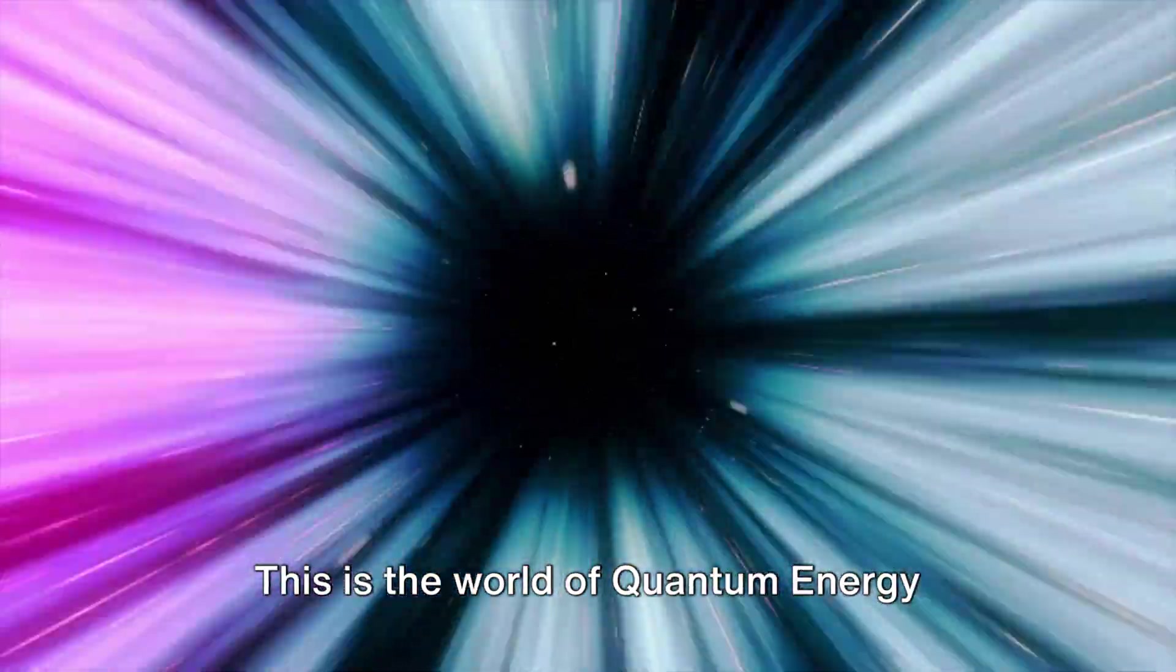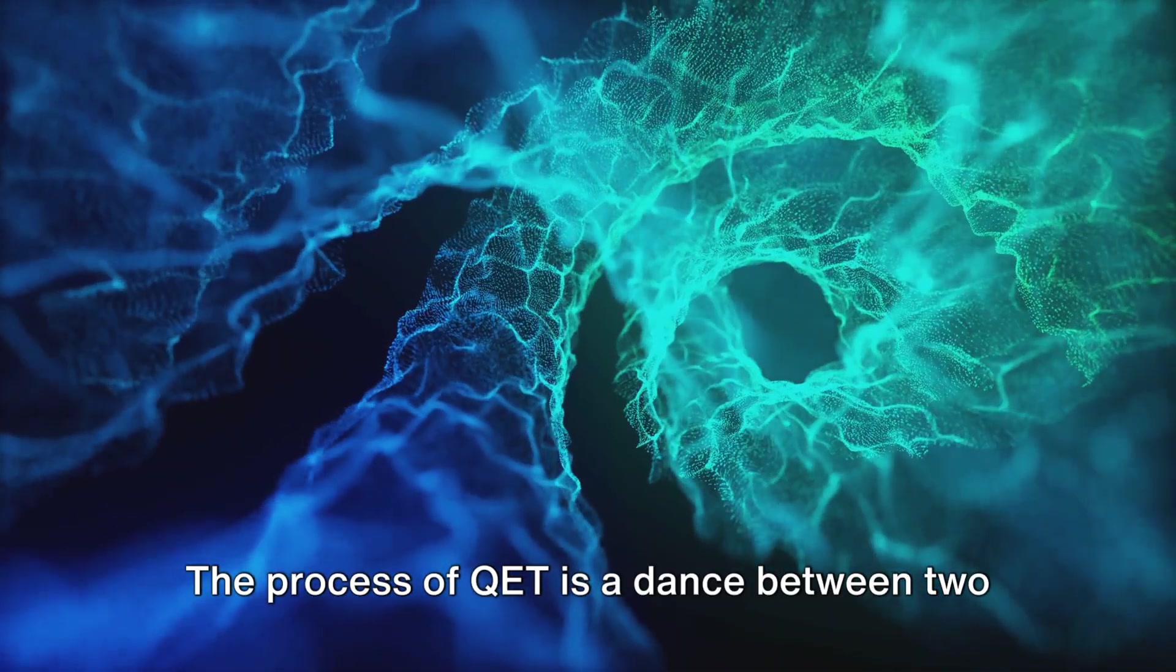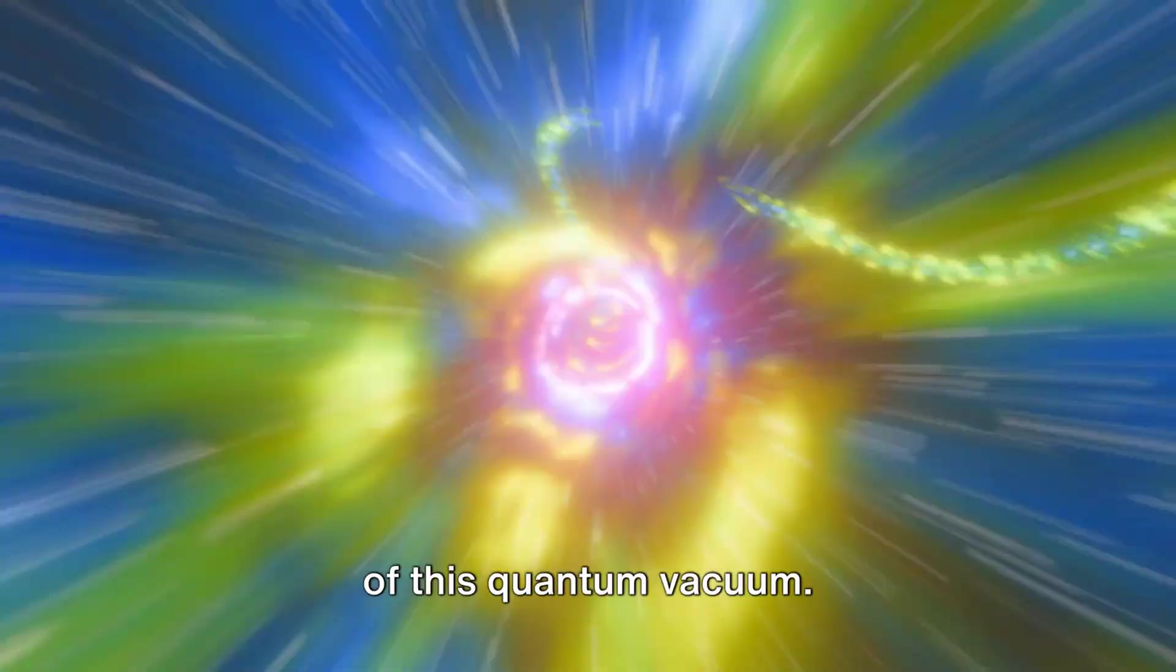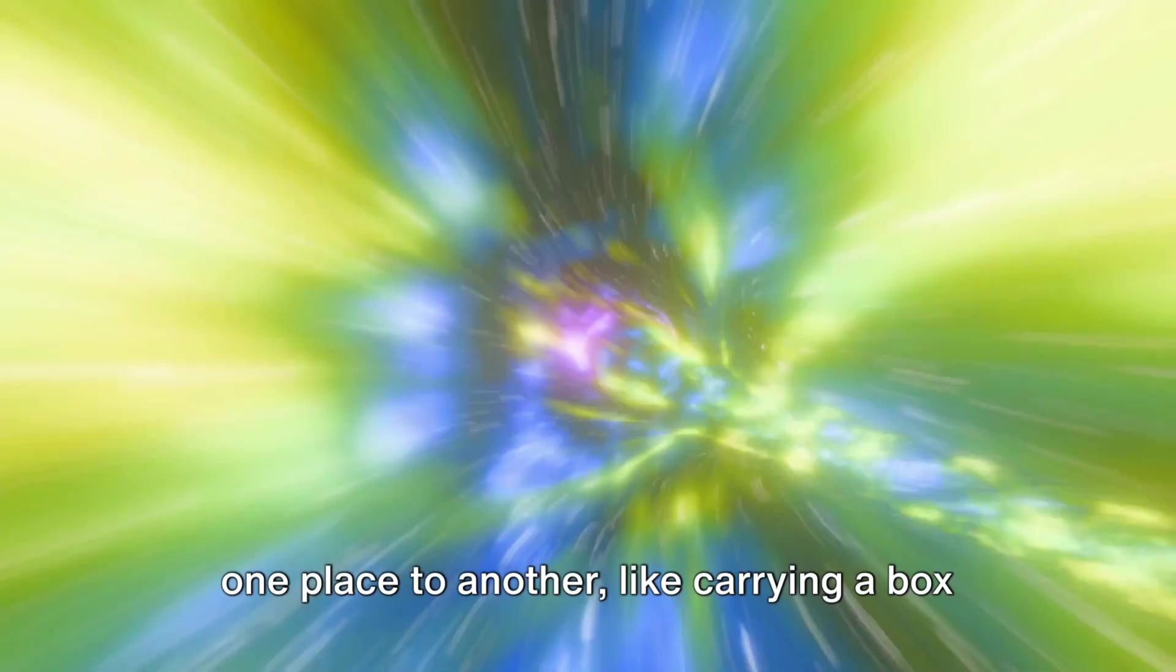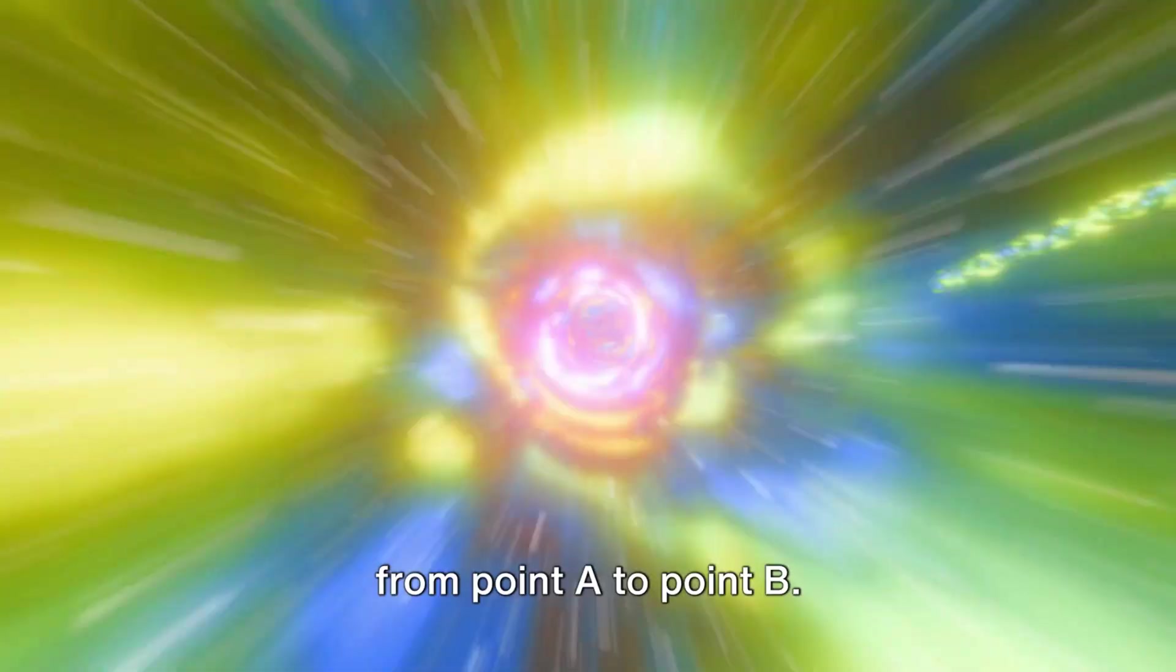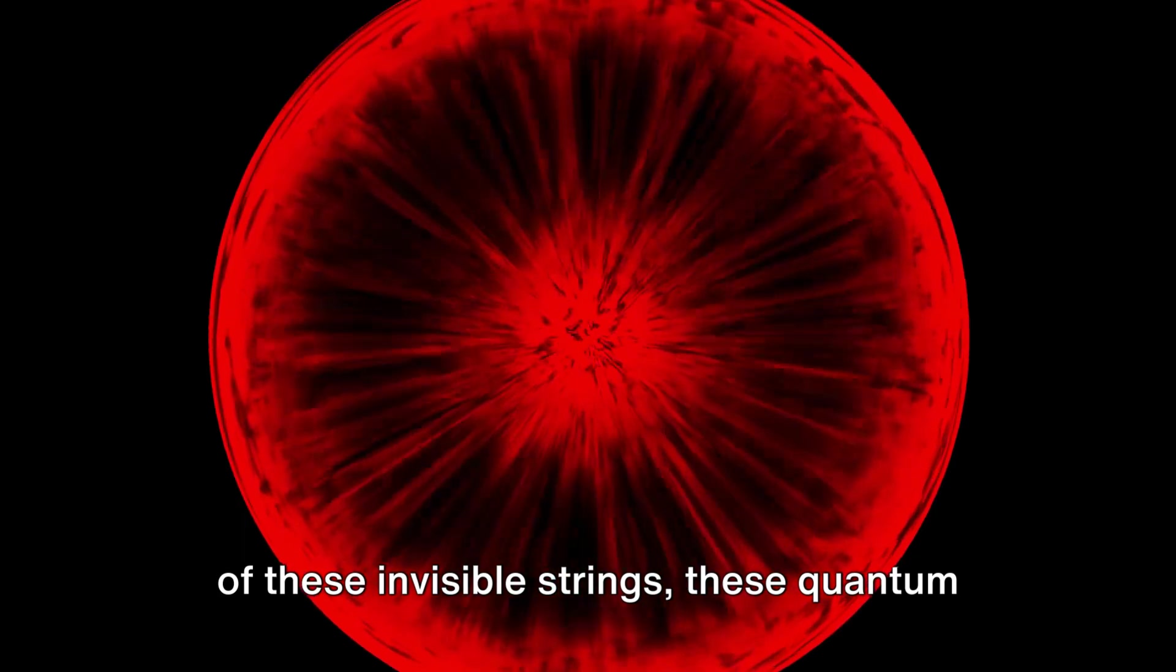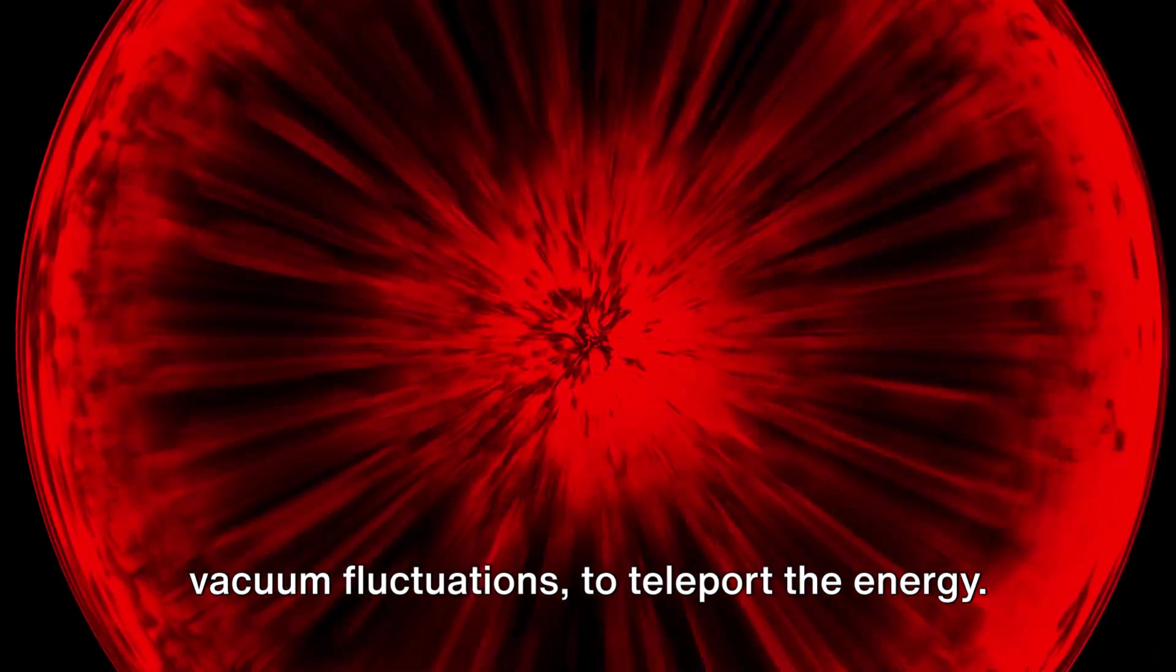This is the world of quantum energy teleportation, or QET. The process of QET is a dance between two observers, each in their own local region of this quantum vacuum. They're not physically moving energy from one place to another, like carrying a box from point A to point B. Instead, they're using the entanglement of these invisible strings, these quantum vacuum fluctuations, to teleport the energy.